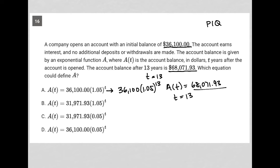I'm going to start off with 1.05 to the 13th power, and then I'm multiplying that by 36,100. And I, in fact, do get that. I get this number. So choice A has to be the correct answer.